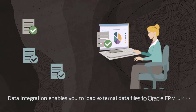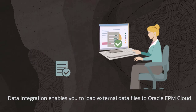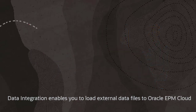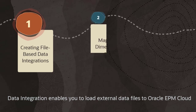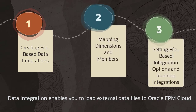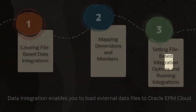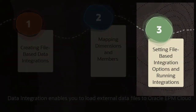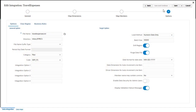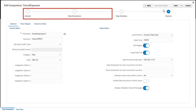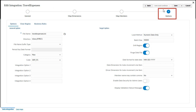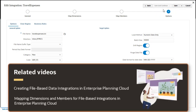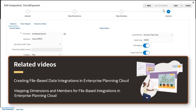Data integration lets you load external data files to Oracle EPM Cloud. You create a file-based data integration, map dimensions and members, and set integration options before running it. In this video, you learn how to set file-based integration options and run the integration. I have already created an integration and added dimension and member mappings. For more information on creating file-based integrations and mapping dimensions and members, view the related videos in the workflow.